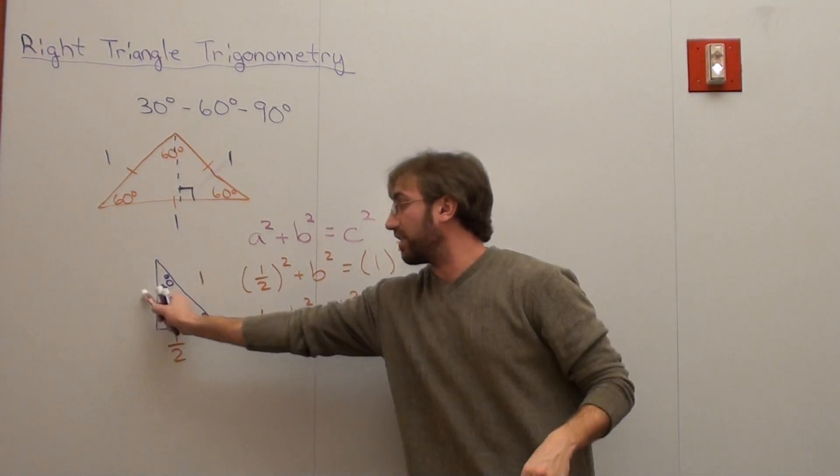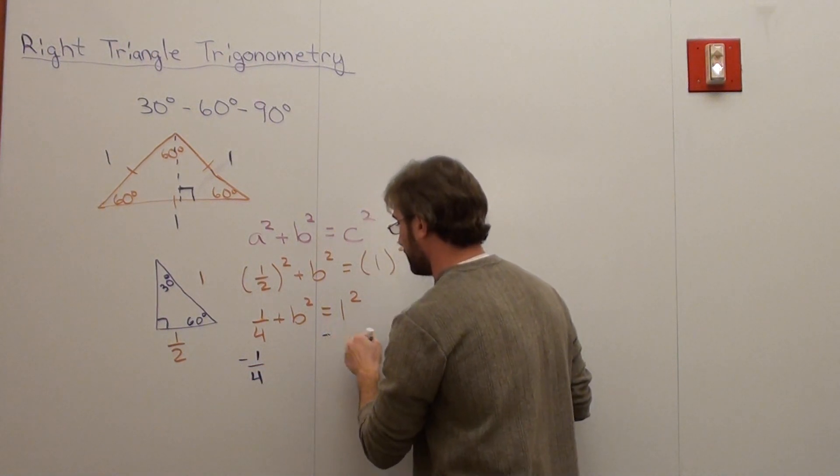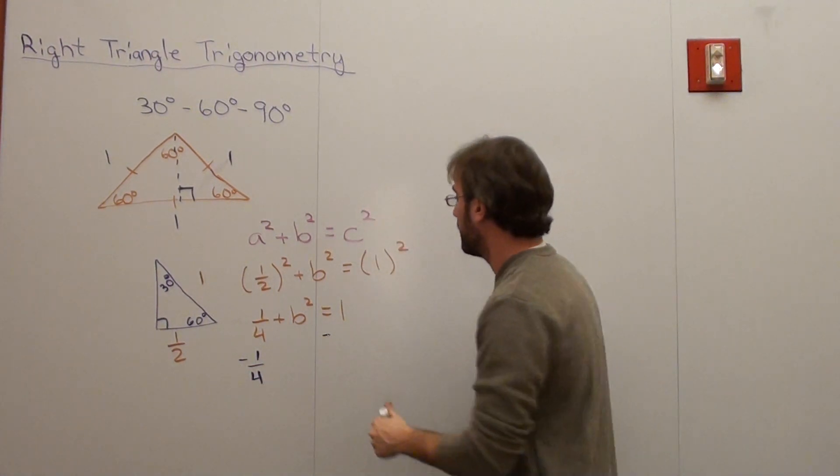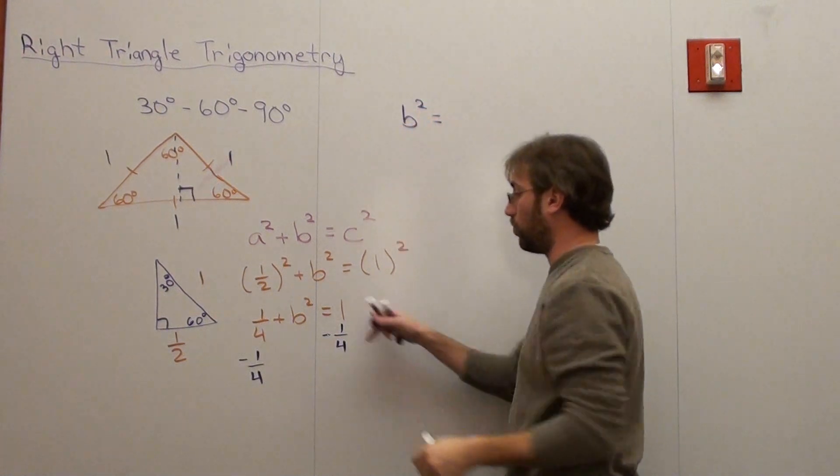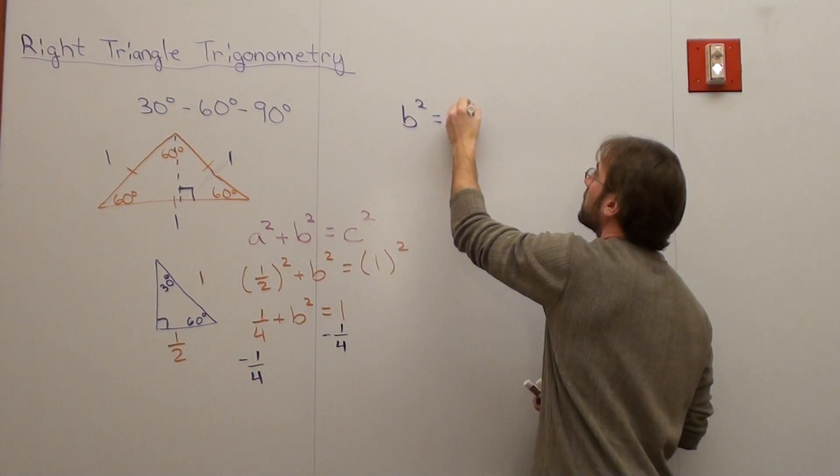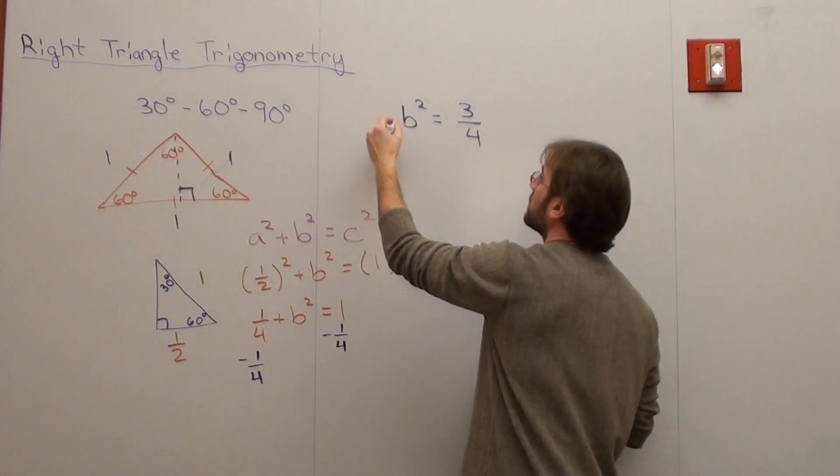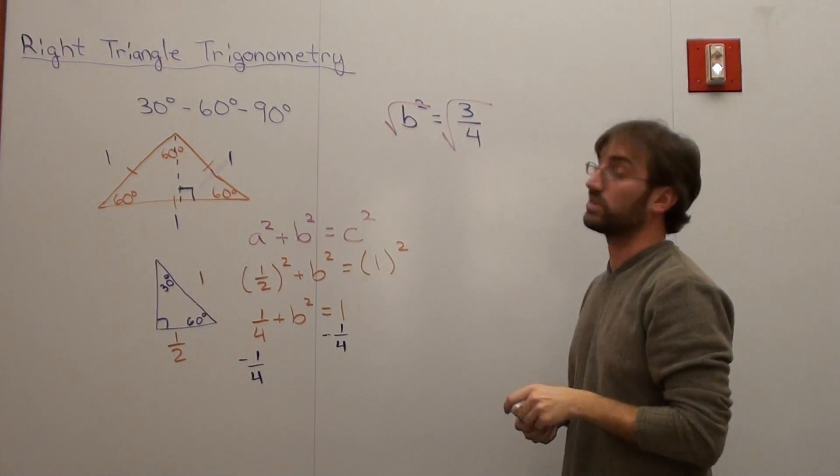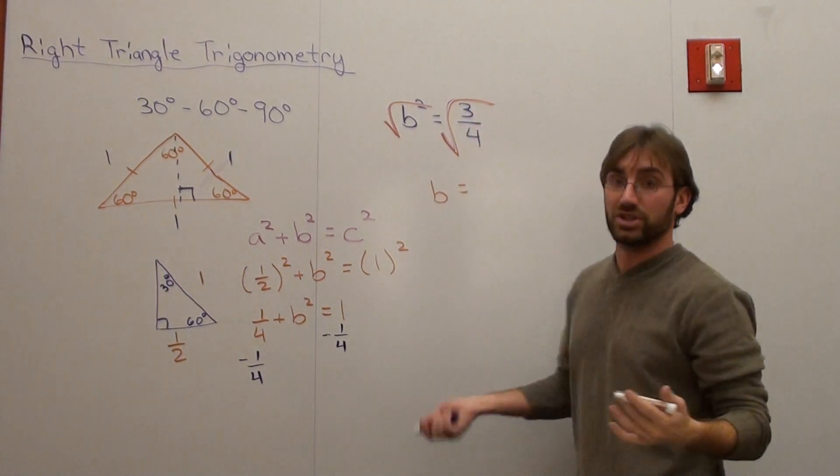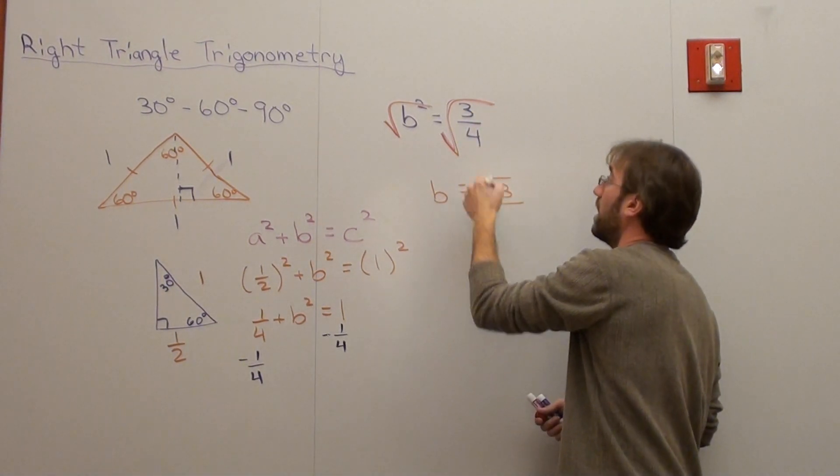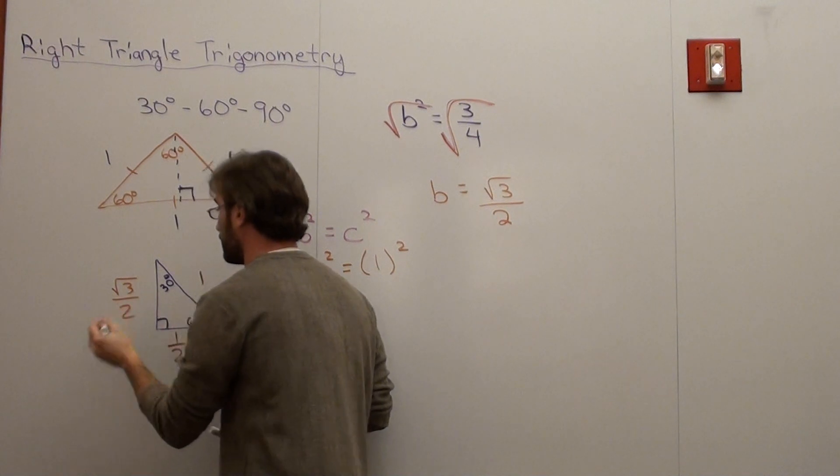Now, in order to figure out b squared, because I'm trying to figure out this side right here, I've got to subtract a fourth from each side. It should just be one, not one squared. Minus a fourth. And what I get, I'm going to move it over here, is b squared equals one minus a fourth, which is three-fourths. Take the square root of both sides. And you get b equals, now the square root of three is just the square root of three. Square root of four is two. And there you go. You've got square root of three over two.